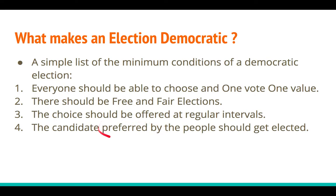The candidates preferred by the people should get elected. If I am voting for Leader A and the majority of votes go to Leader A, then Leader B should not become the ruler — Leader A should be the ruler. The people's chosen candidates should become leaders.